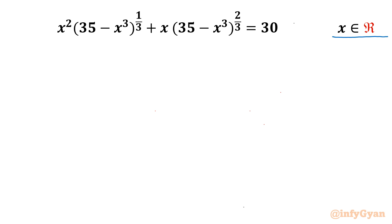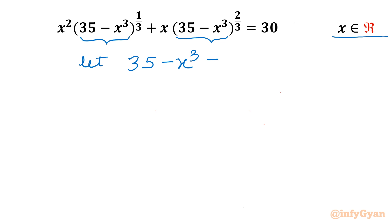Let's get started by writing our substitution straight away. Let me write 35 minus x cubed inside the brackets, and suppose those brackets equal y cubed. So I can write this equation as x cubed plus y cubed equal to 35. This is our equation number 1.